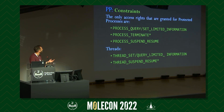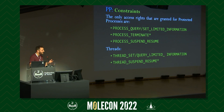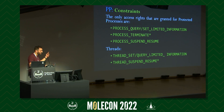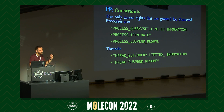Protected processes exist alongside normal Windows processes but with more constraints. The only access rights granted for protected processes are those listed on the slide. For example, you cannot call the VM_READ access right because that would allow you to tamper with a protected process. There is only one exception: process termination and thread suspend/resume, and these two access rights are only enforced on protected process light anti-malware technology or a different type of signer.